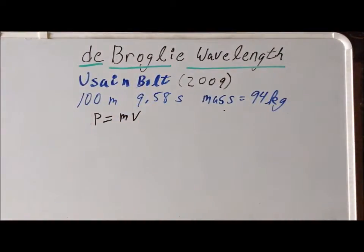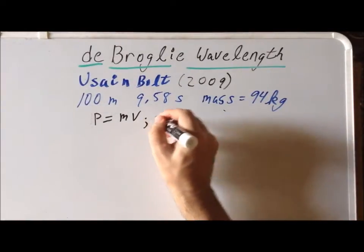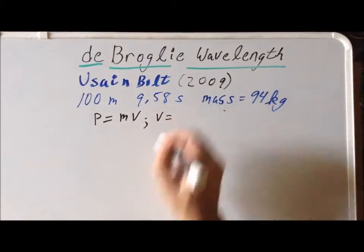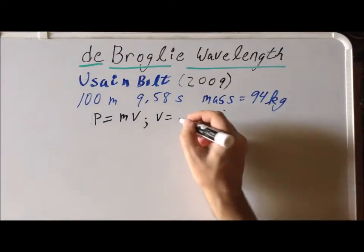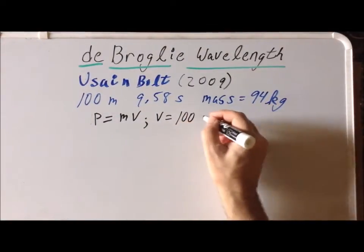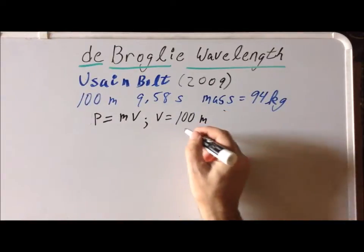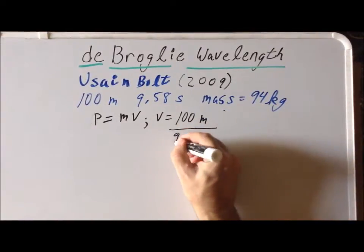Now, to calculate his velocity, recall that velocity is distance per unit time. The distance that he ran was 100 meters, and the time is 9.58 seconds.